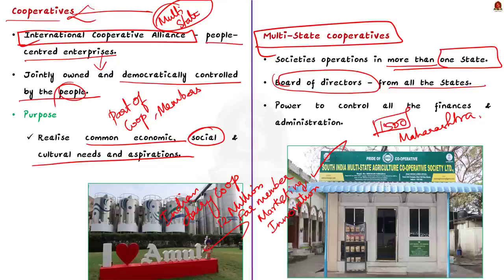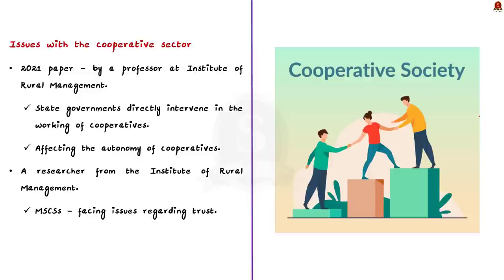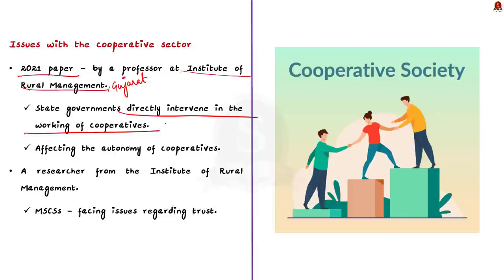Moving on to the prevalent issues with cooperative societies: independence and autonomous powers are crucial for them. A 2021 paper by a professor at the Institute of Rural Management in Gujarat points out that in some states, government policies allow state governments to contribute to the share capital of cooperatives, enabling direct intervention in their working in the name of public interest. This political control is seen in Maharashtra, Kerala, Gujarat, Karnataka, Tamil Nadu, Madhya Pradesh and West Bengal, affecting cooperative autonomy.